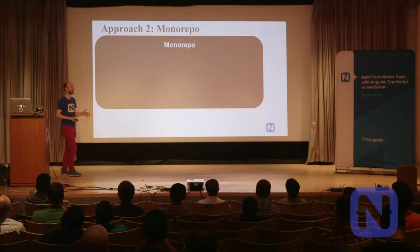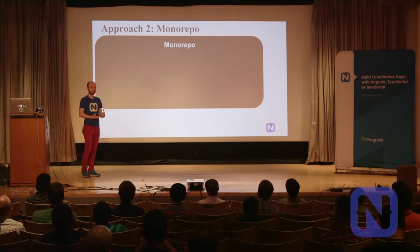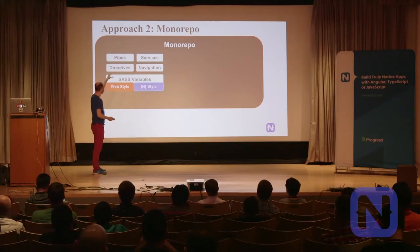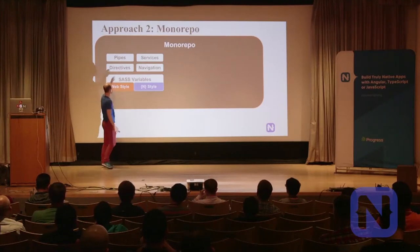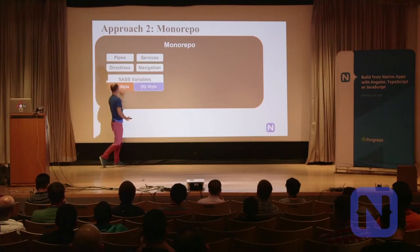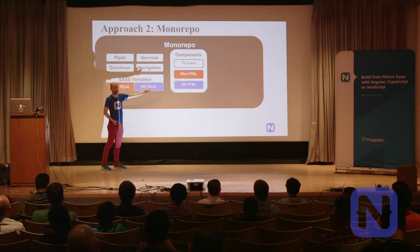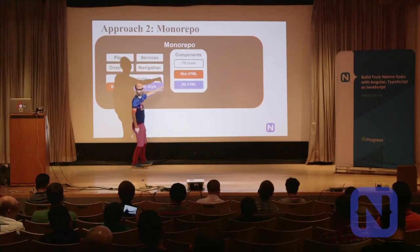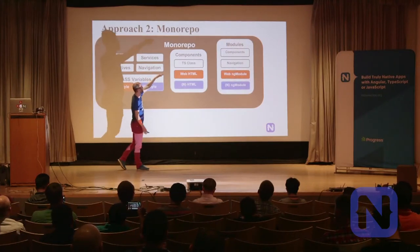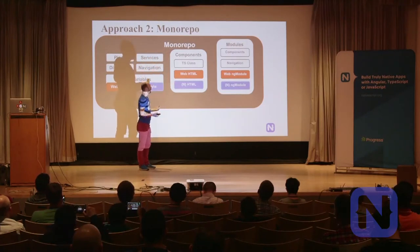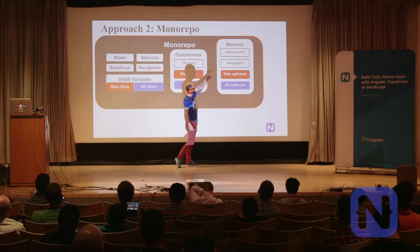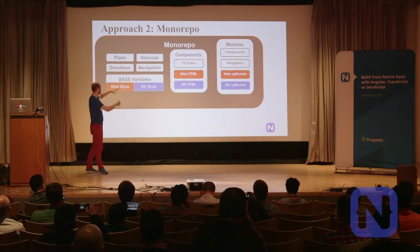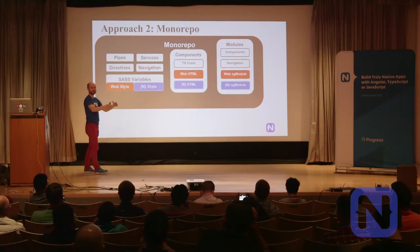The other approach, which I like a lot more, is a monorepo — a single project, like Lord of the Rings: one to rule them all. Inside the monorepo we create all our Angular-specific items: SASS variables, but two stylesheets — one for web, one for NativeScript. Components have shared TypeScript code, but two separate HTML versions. Modules have routing for navigation, but the web NgModule will differ from the NativeScript NgModule because there may be different imports.